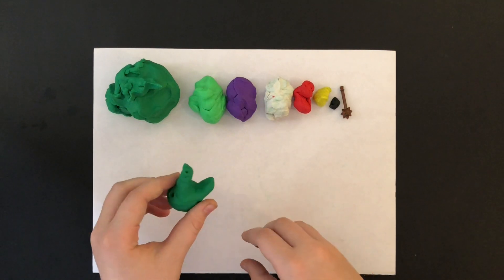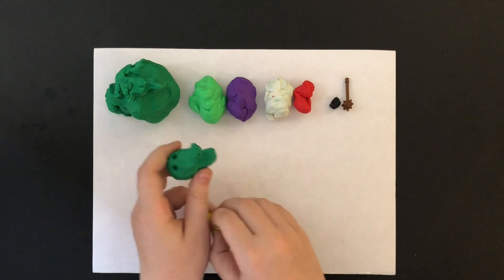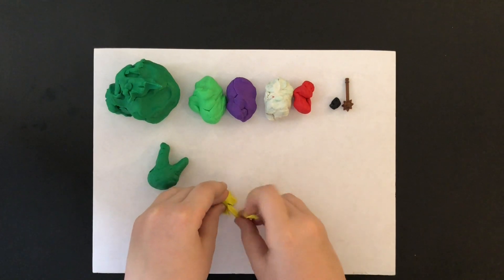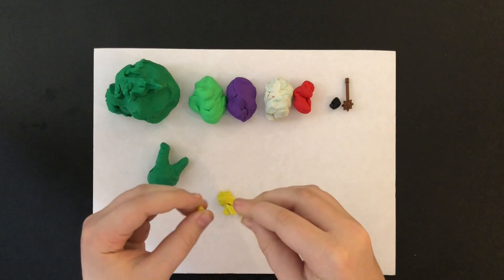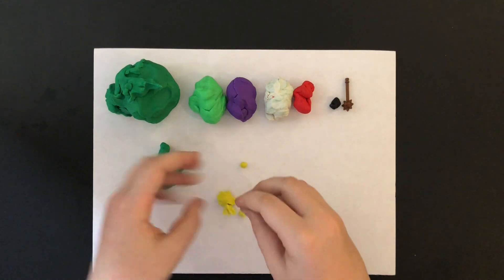Now I can start making the eyes. I take a little piece of yellow clay, and roll it into two little balls. Then I place the eyeballs in the eye holes.